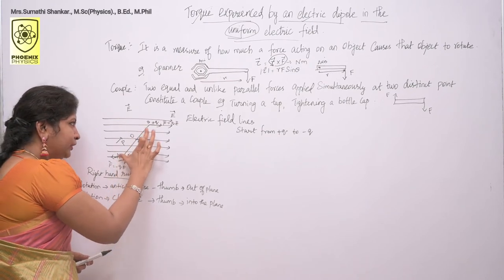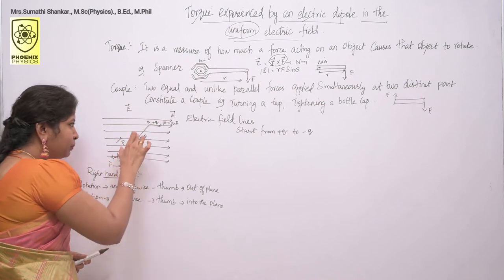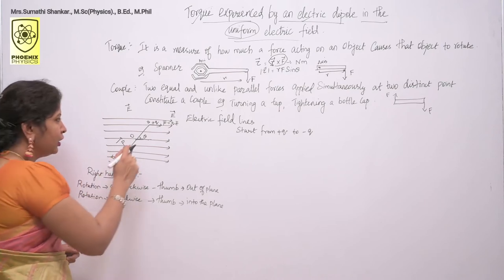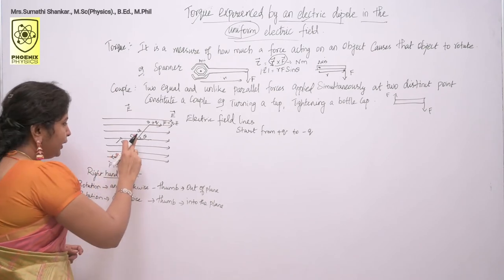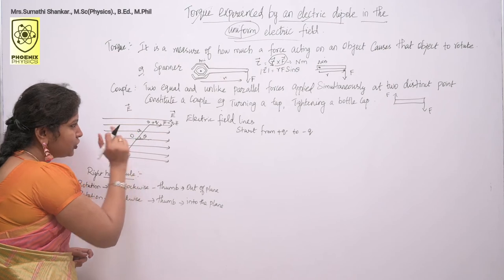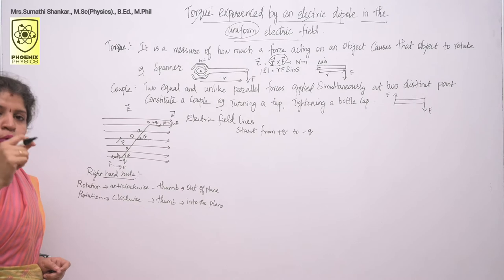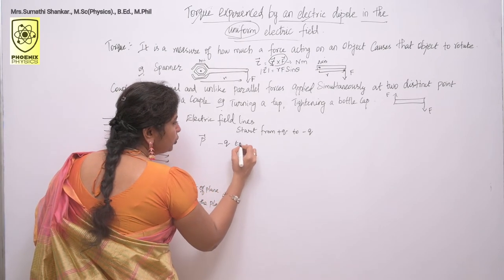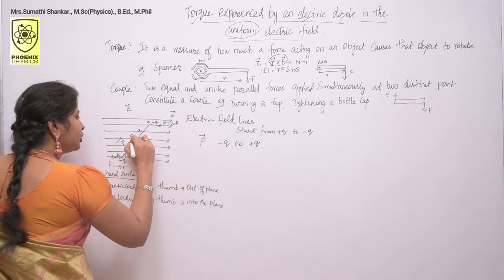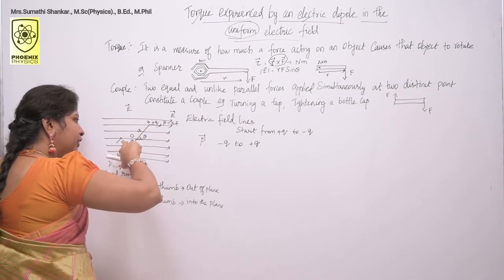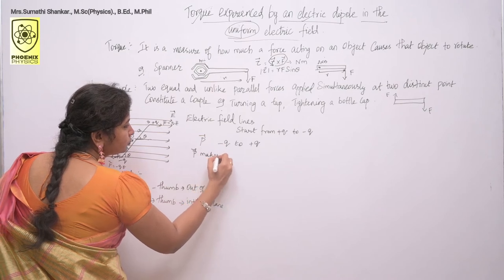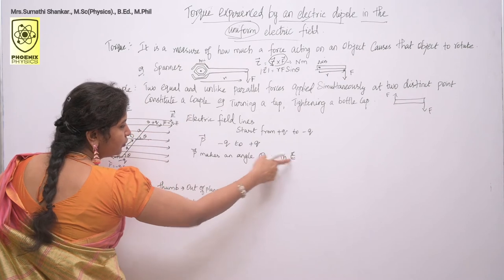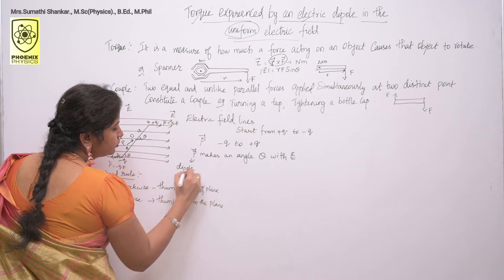Consider an electric dipole AB separated by a distance 2A. O is the midpoint of the dipole, so from O to A the distance is A, and from O to B the distance is A. The electric dipole moment vector P is directed from minus Q to plus Q. P vector makes an angle theta with E, where E is the electric field.